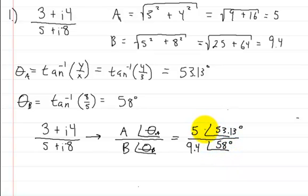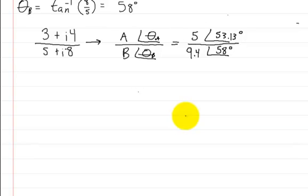So now we can divide. But you're probably thinking, how do you divide angles? Well, you don't. This is what you actually do. First, we're going to only deal with the magnitudes, the 5 over the 9.4. All you're going to do is just divide that. So you do 5 divided by 9.4, and you're going to get about 0.53.